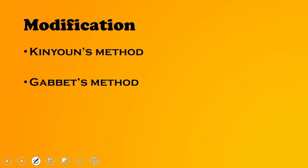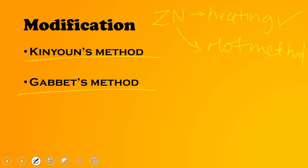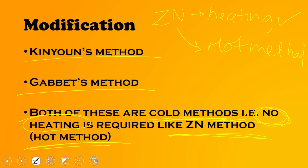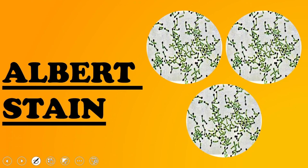Two important modifications of acid-fast staining: the ZN stain is a hot method because heating is required. The Kinyon's method and the Gabbet's method are cold methods because no heating is required. So ZN stain equals hot method; Kinyon's and Gabbet's equal cold methods.